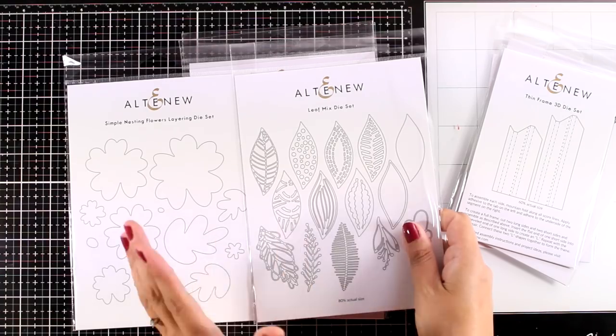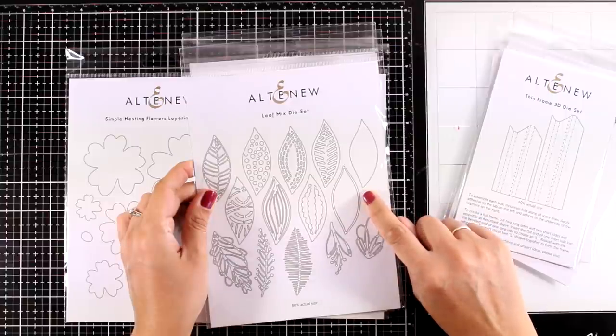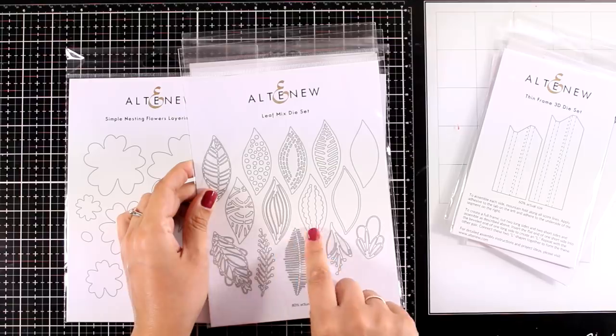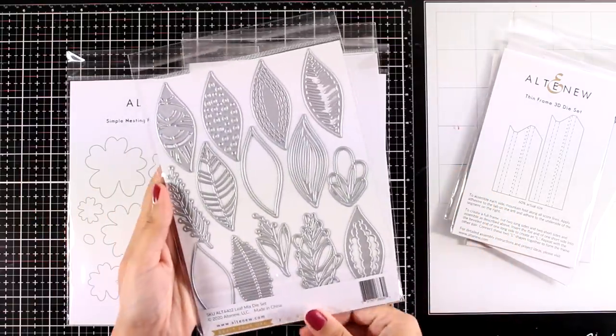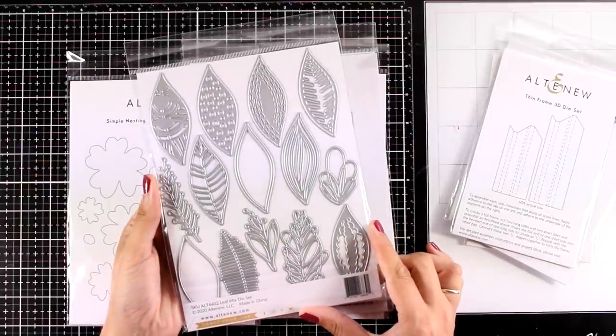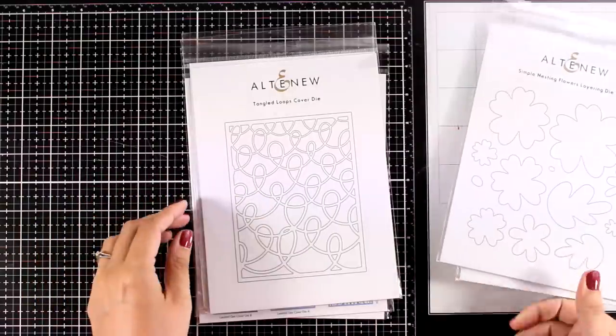Now here's another one that you can mix and match with the flowers if you like. This is a leaf die set. They give you a basic leaf and then all the rest of the dies are decorative elements that you can die cut and stick on top of the basic leaf or you can use them separately like I'm going to do on today's video. So many different designs and don't think of them just as leaves. They can be petals as well to create your own flower.